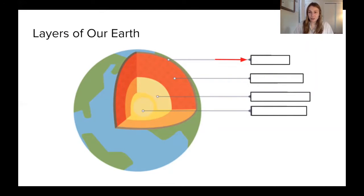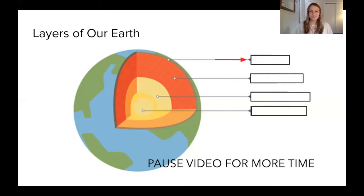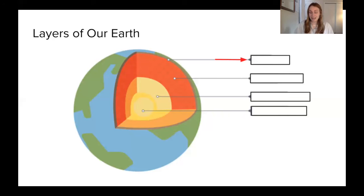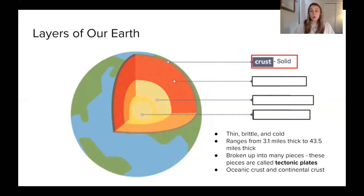The first layer of our earth that we're going to name is the outermost layer. Just by looking at our model, you can see that it's really, really thin in comparison to those other layers. If you said crust, you were correct. The crust, which is our outermost layer, is really thin and it's actually pretty brittle. Relative to the other layers of our earth, it's considered to be very cold.